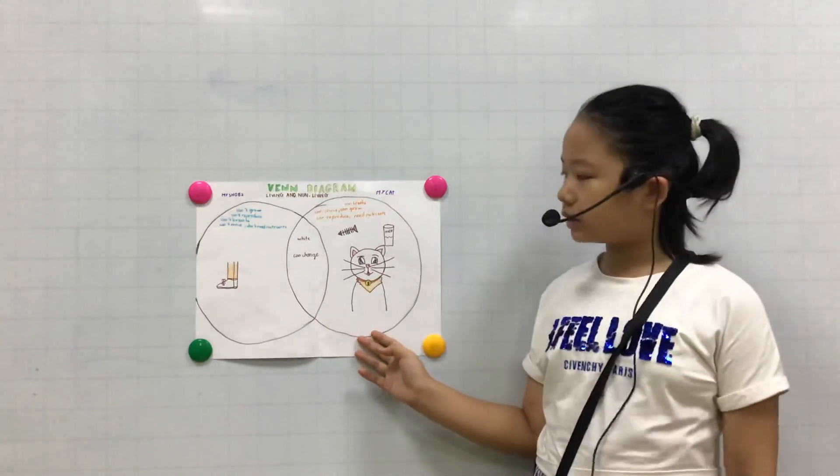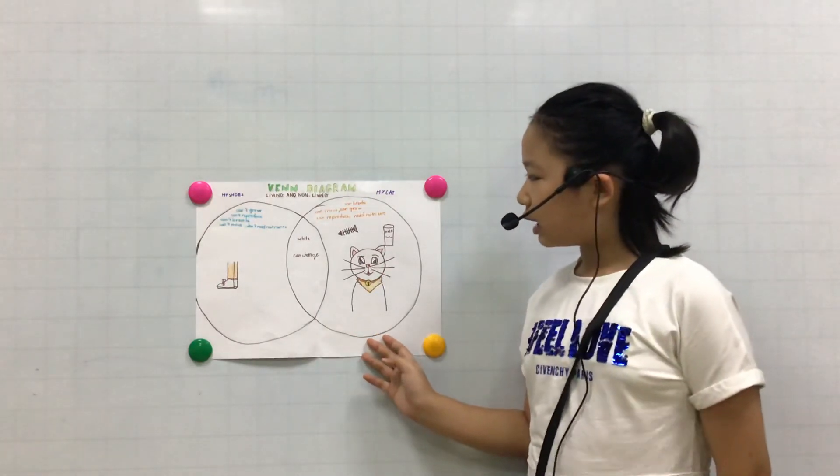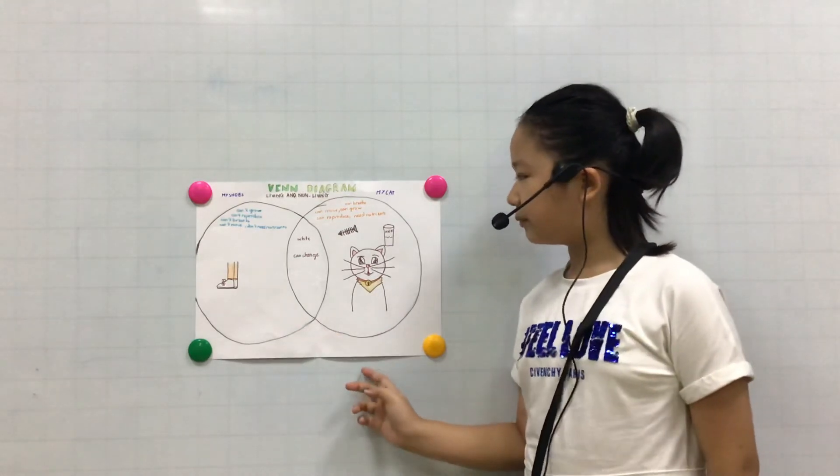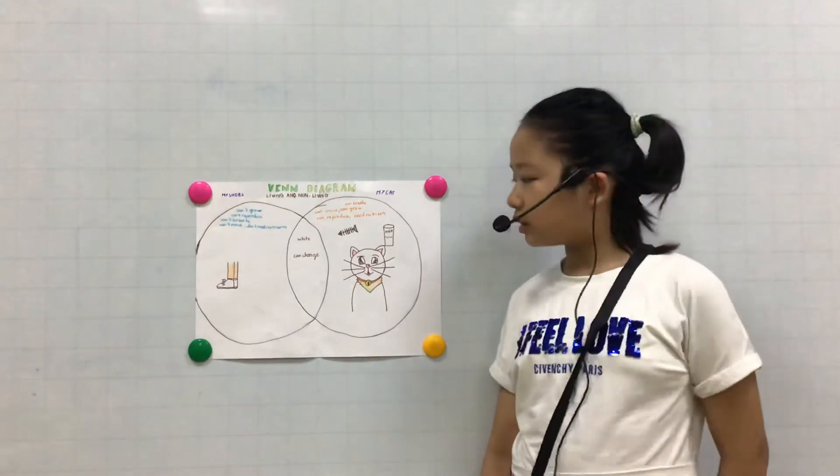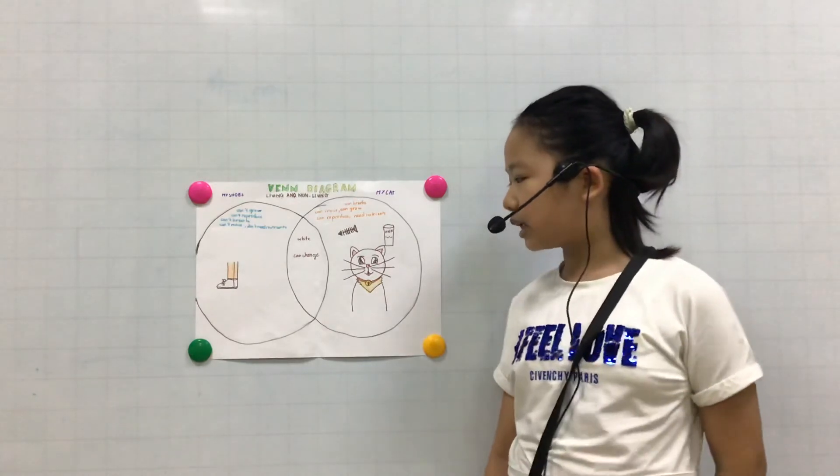Now I'm going to tell you about how the cat and the shoes are the same. Both of them are white and both of them can change.